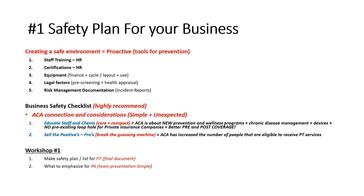Risk management number one: a safety plan for your business is what we're talking about. You want to create a safe environment — be proactive, put this into your staff training, look at certifications, and look at equipment. Connecting all the dots back to our expenses and financing: you would want to look at your equipment and do a cycling of how you purchase and replace it. If we're in a fitness facility, you don't want to replace 20 different machines all in the same year. If you're on a two-year cycle, you would do half — 10 one year and 10 the next — so you have a consistent budget line item on your equipment expenses.